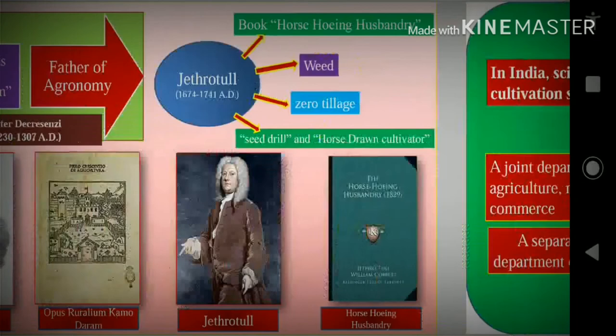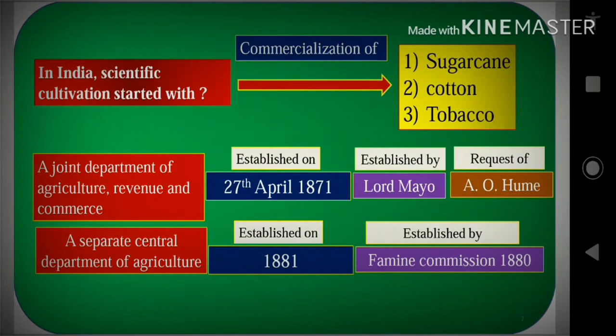In India, scientific cultivation started with the commercialization of which crops? That is sugarcane, cotton, and tobacco. After this commercialization of these three crops, the scientific cultivation in India has started. Remember this.